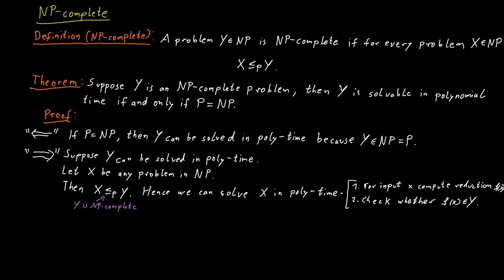The first step, the transformation, runs in polynomial time because we have a polynomial time Karp reduction here. And the second step also takes polynomial time because we said we can solve Y in polynomial time. So this means that every problem in NP can be solved in polynomial time, and that means NP must be a subset of P. But we already know that P is also contained in NP, and therefore P must be equal to NP.